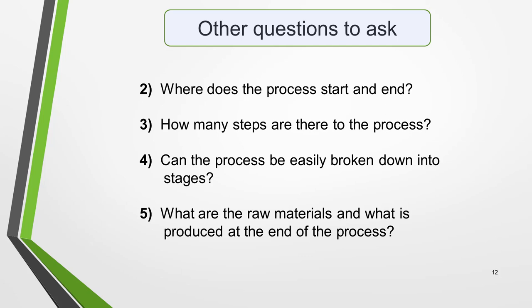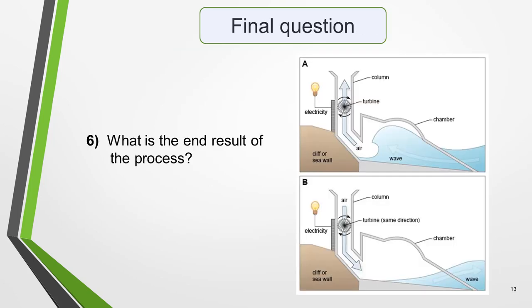Question 5: what are the raw materials, and what is produced at the end of the process? These two questions obviously apply only to manufacturing processes. For other types of process it might be more appropriate to ask question 6: what is the end result of the process? The graphic on this slide shows a different type of process — more of a system — and this question would certainly be helpful to ask here. The end result is the production of electricity.